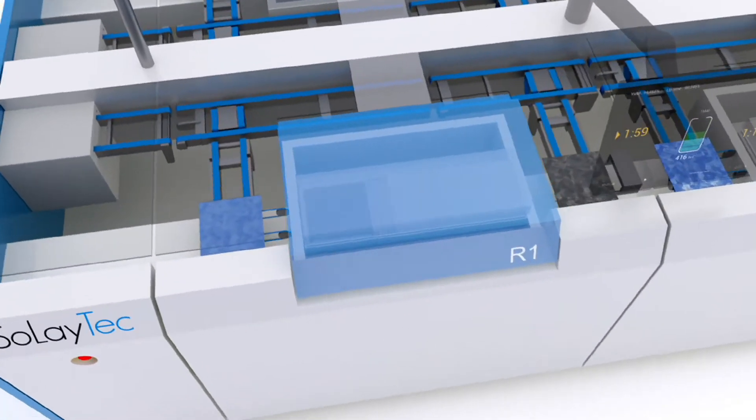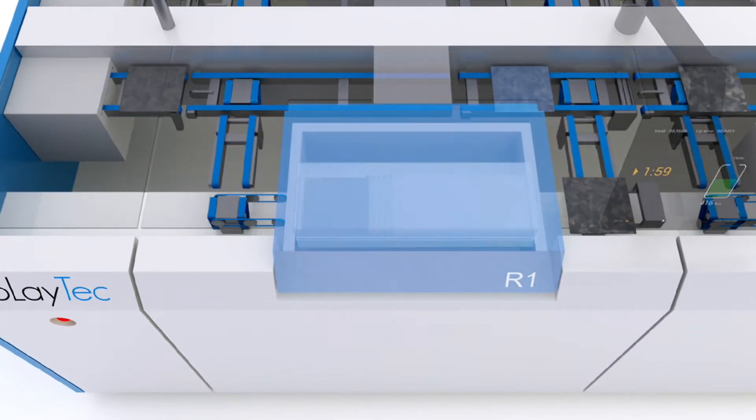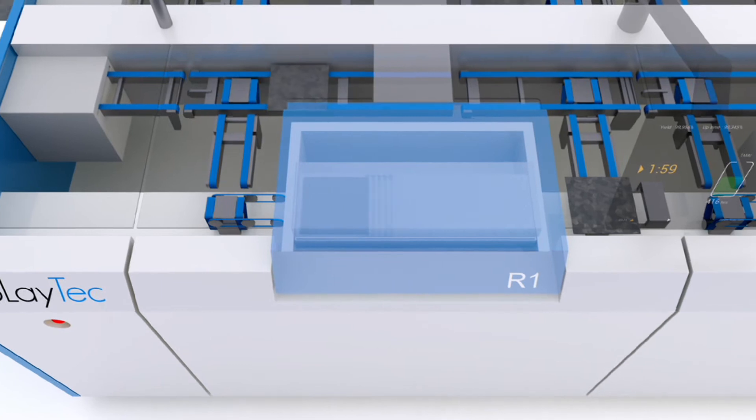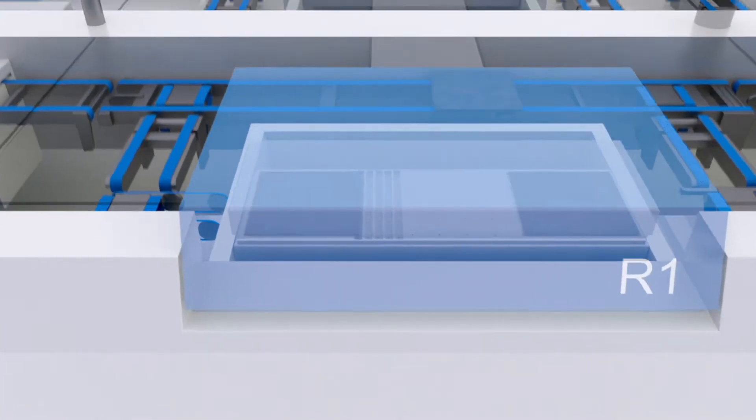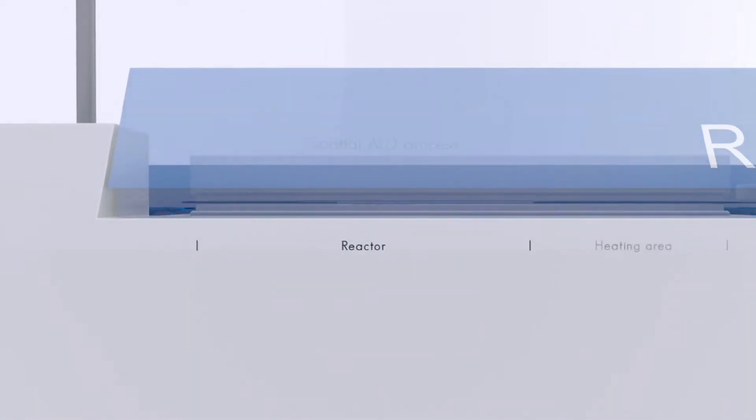Two main conveyors distribute the wafers over the multiple deposition units. Wafers are transported using the double floating principle to avoid any mechanical contact. After entering the deposition unit, the wafers are heated to process temperature.